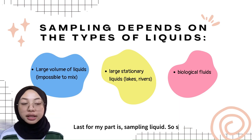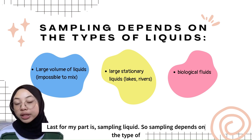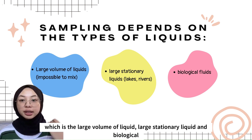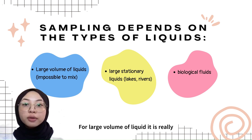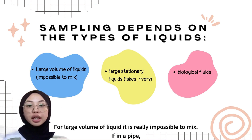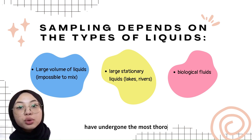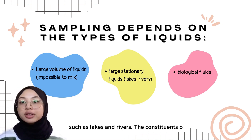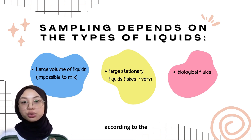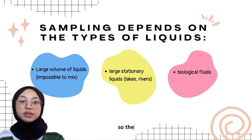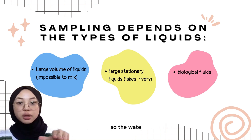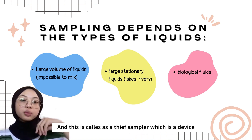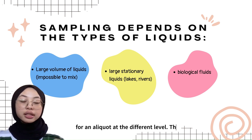The last topic for my part is sampling liquid. Sampling depends on the types of liquid, and there are three types: large volume of liquid, large stationary liquid, and biological liquid. For large volume of liquid, it is really impossible to mix, even in a pipe after passing through a pump that may have undergone the most thorough mixing. For the second type, large stationary liquids such as lakes and rivers, the constituents of liquids may vary according to depth. If a water sample is taken from a river, the water sample is collected at the surface, the middle of the river, and also the bottom of the riverbed. This is called a detective sampler, which is a device for collecting an aliquot at different levels.